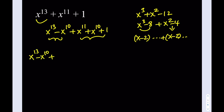x to the 11th power — what I'm going to do is subtract x to the 8th from it. Maybe you've already seen what I'm doing here. And then add the x to the 8th back. If you take out x to the 10th, you get x to the 3rd minus 1. If you take out x to the 8th, you get the same thing. So these two definitely have a common factor.